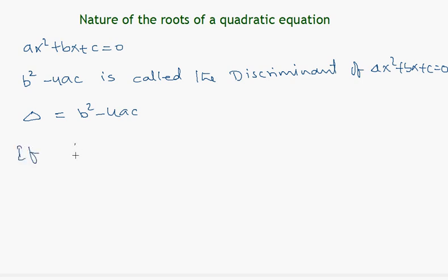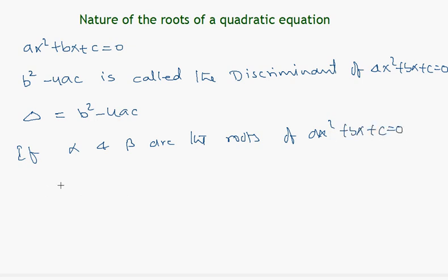If alpha and beta are the roots of ax squared plus bx plus c equals zero, then considering a, b, c are real numbers, we have the following three cases.